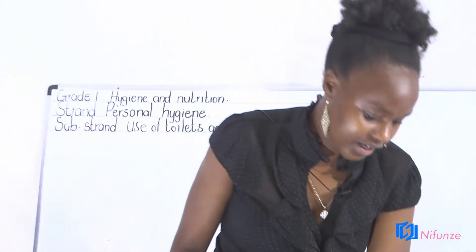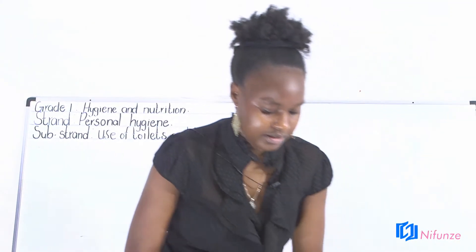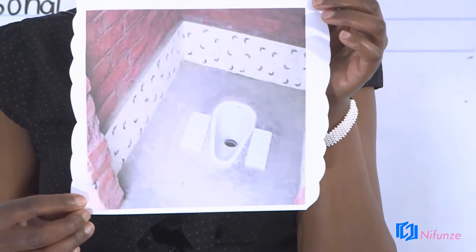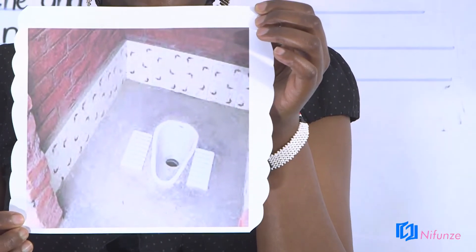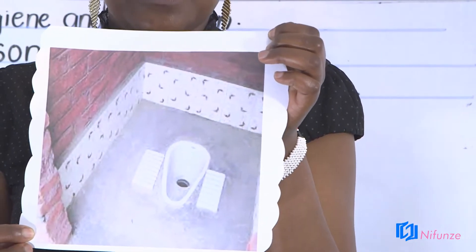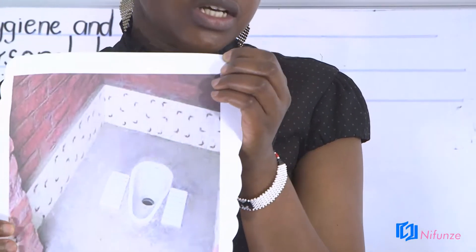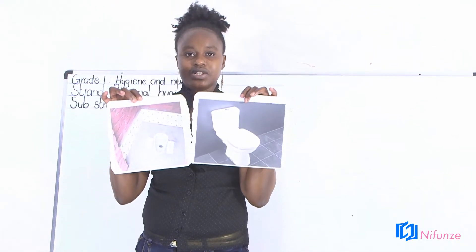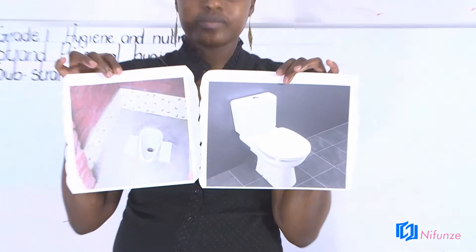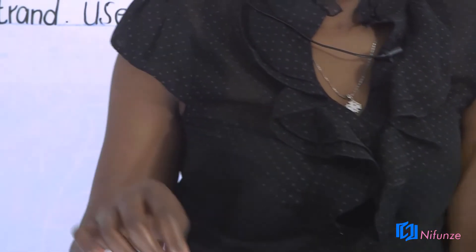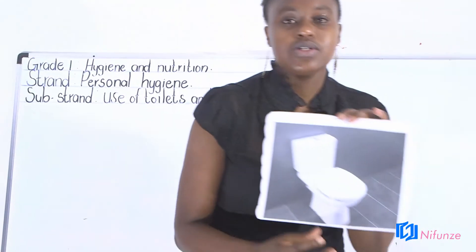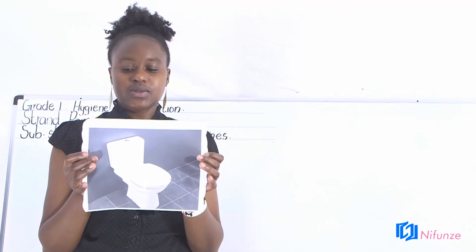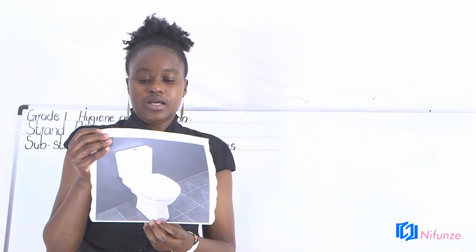Here, can you see it? Can everybody see this picture nicely? What is this — is this a toilet or a latrine? I have another one over here. What is this? Is this a toilet or a latrine? Can you identify? Can you differentiate from the two pictures which one is a toilet and which one is a latrine?